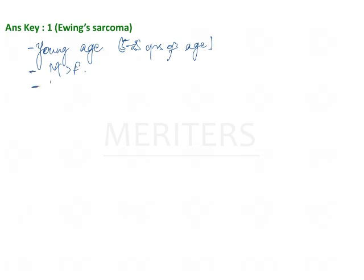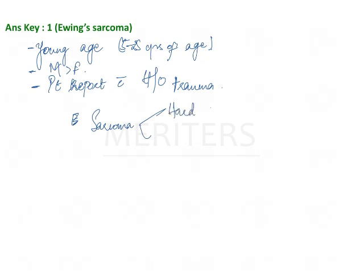A very important feature of Ewing sarcoma is that the patient will report with a history of trauma, and the tumor is known to occur in the area where the trauma took place. Ewing sarcoma occurs in both hard and soft tissue. The hard tissue component is called Ewing sarcoma, whereas the soft tissue counterpart is called PNET — primitive neuroectodermal tumor. Both are the same pathology but differ in the tissue of origin.